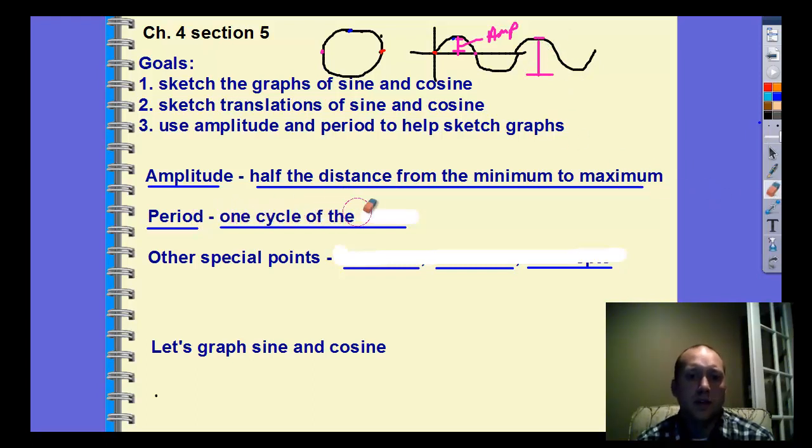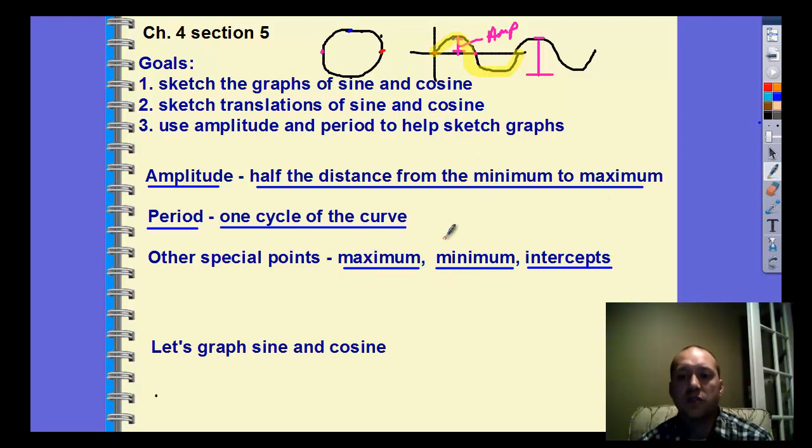The period is one cycle of the curve. So if we are looking at one cycle without repeating anything, so there's one cycle of the wave. After that, I'm repeating the wave again. And then other special points we're going to be looking at or helping us graph is the max, the min, and the intercepts. And these intercepts, we call them intercepts on the parent function. They are the x-intercepts. But as we shift it, they may be of a translated axis. If you translate the x-axis with the shifting, then you can still find the intercepts.